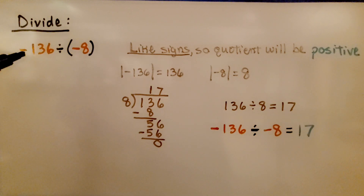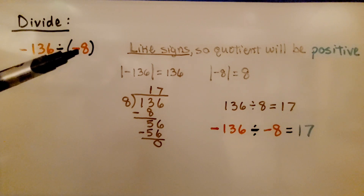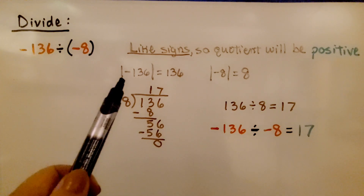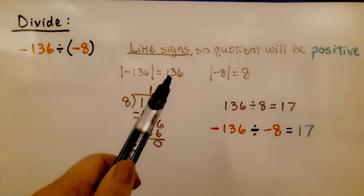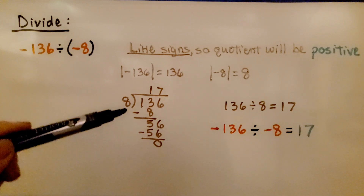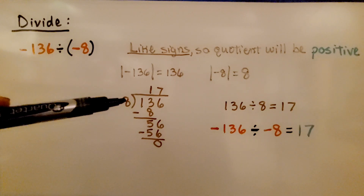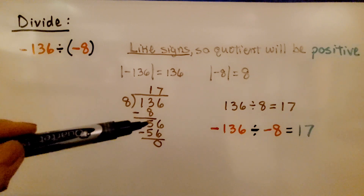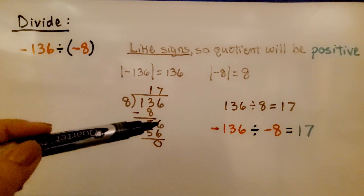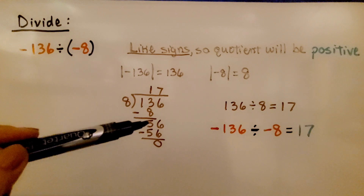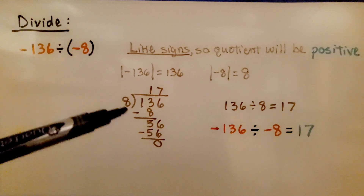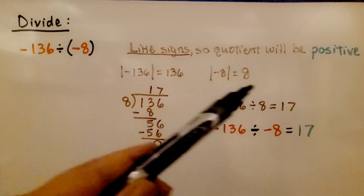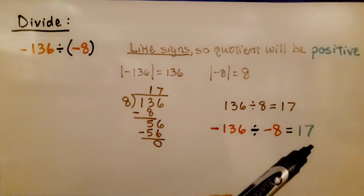For this problem, we need to divide negative one hundred thirty-six by negative eight. They have like signs, so we know the quotient will be positive. The absolute value of negative one hundred thirty-six is one hundred thirty-six, and the absolute value of negative eight is eight. We do one hundred thirty-six divided by eight: eight fits into thirteen one time, one times eight is eight, subtract to get five, drop the six down. Eight into fifty-six — seven times eight is fifty-six — subtract to get zero. The quotient is seventeen, and because they have like signs, it's a positive seventeen.